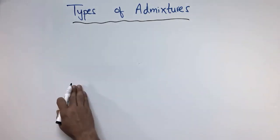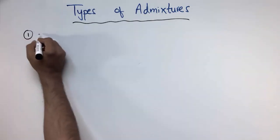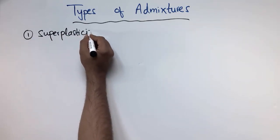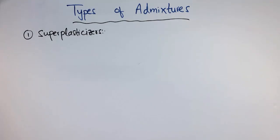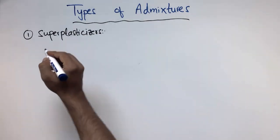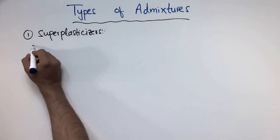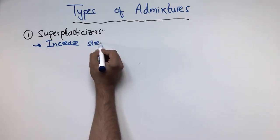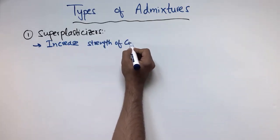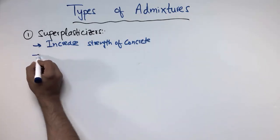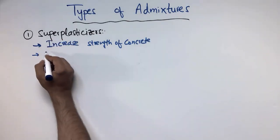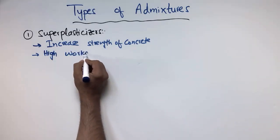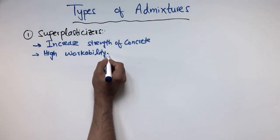The first type of admixture which is mostly used is the super plasticizer. The main purpose of the super plasticizer is it increases the strength of the concrete, and the second purpose is it also increases the workability of the concrete — so high workability. These are the two main purposes of this type of admixture, the super plasticizer.